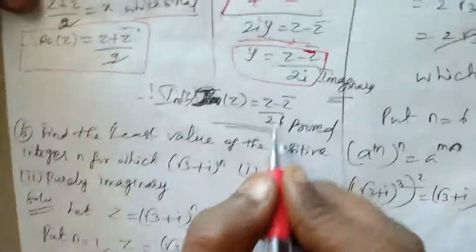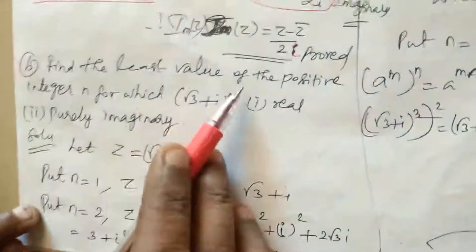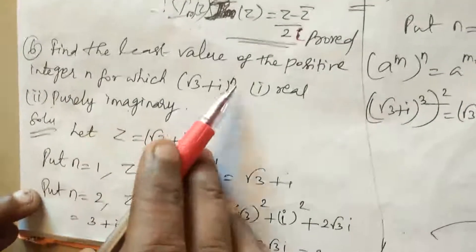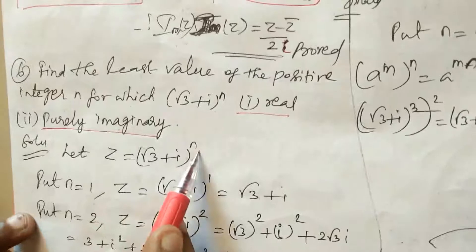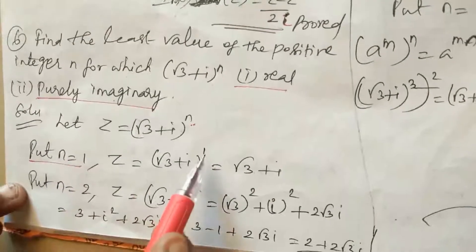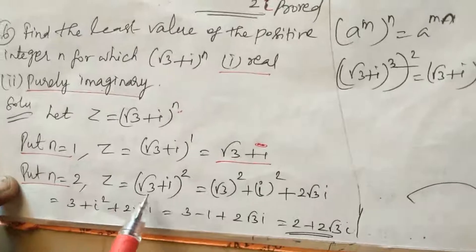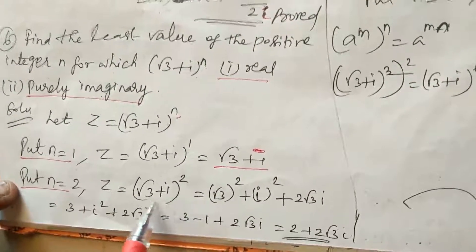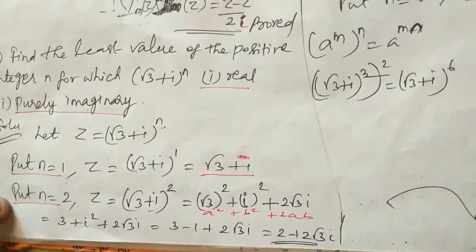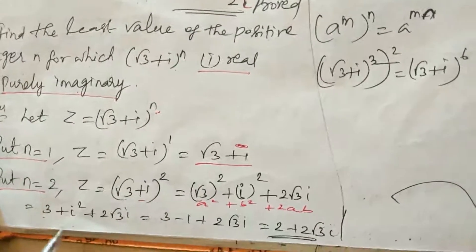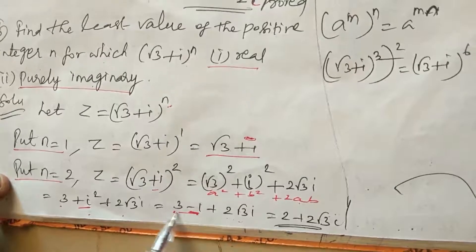The next question: find the least value of the positive integer n for which (√3 plus i) to the whole power n is purely real (first part) or purely imaginary (second part). Let z equal (√3 plus i)^n. For n equals 2, using (a plus b) squared: (√3)^2 plus i^2 plus 2√3·i equals 3 minus 1 plus 2√3·i equals 2 plus 2√3·i, which has both real and imaginary parts.